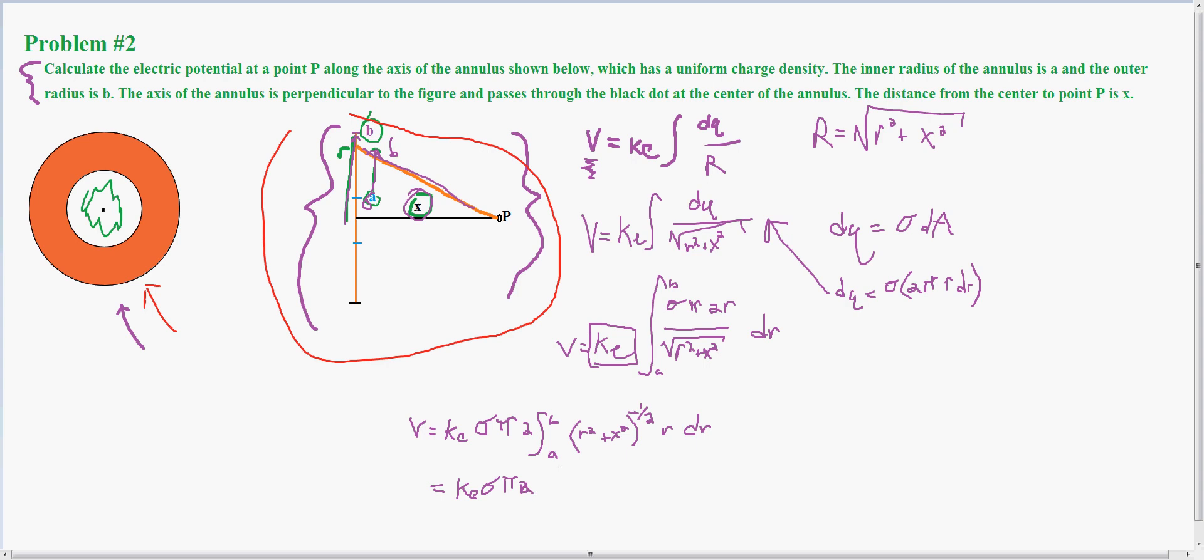That's multiplied by the square root of (X squared plus B squared) minus the square root of (X squared plus A squared).